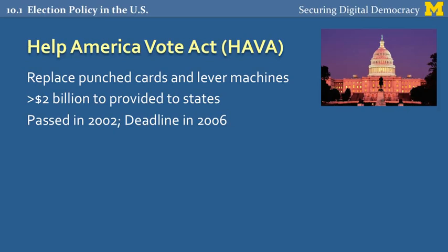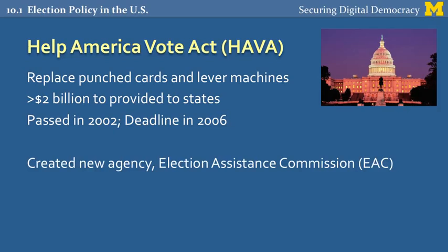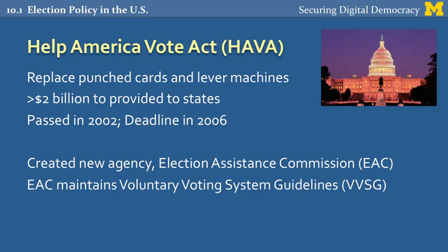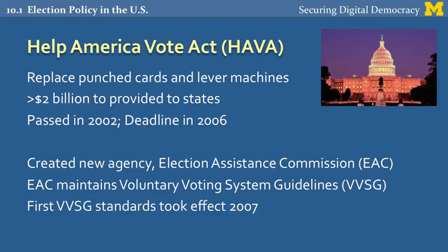HAVA also included several other important reforms. It created a new agency, the Election Assistance Commission, or EAC, to be in charge of setting guidelines and standards for voting. The EAC was charged with maintaining something called the Voluntary Voting Systems Guidelines, or VVSG, that would replace the earlier FEC requirements. The first VVSG standards took effect in 2007. But notice that this is after the deadline for buying new equipment. So there was no way that any new and wiser guidelines that this agency would produce would have an effect on the equipment that was already going to be purchased with the federal money — there just wasn't enough time.